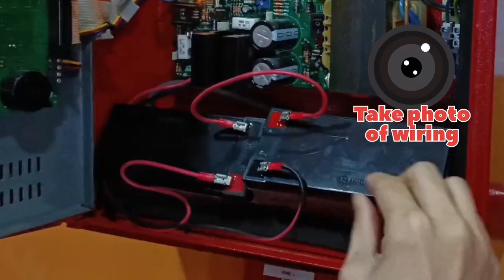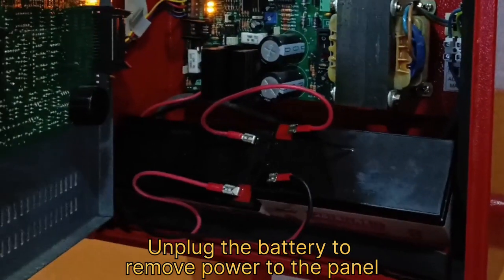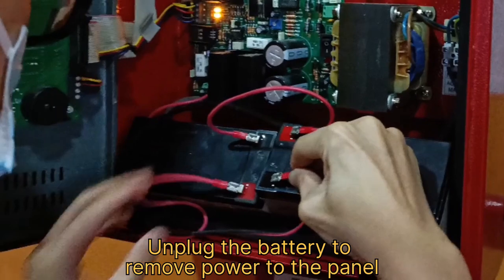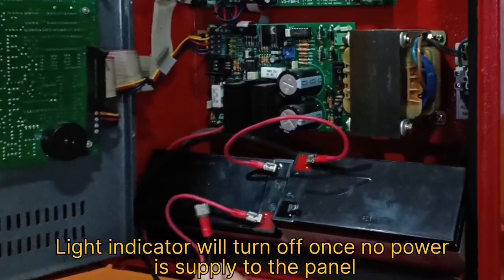Remember to take a photo of the wiring. Unplug the battery to completely remove power to the panel. The yellow light will turn off once there's no power supply to the panel.